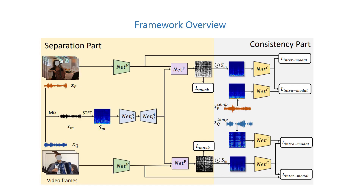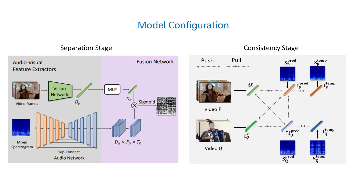Let's have an overview of the whole framework. The pipeline of Seiko is composed of the separation part and the consistency part. The separation stage is responsible for predicting separation masks by combining audio features and visual features. The consistency stage takes high-level features to compute the intramodal and intermodal consistency constraints. The separation network includes a vision network, audio network, and fusion network. The audio network generates audio features from the mixed audio spectrogram, while the vision network computes visual features from input videos. Afterward, we fuse the visual guidance into the audio features to compute the separation mask.